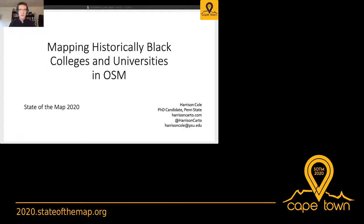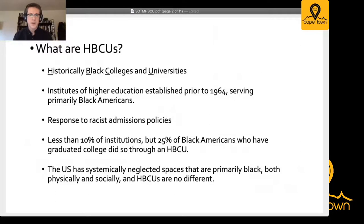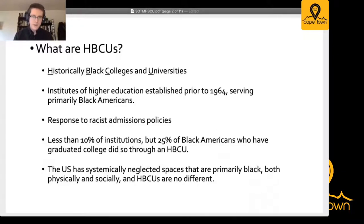Hi, my name is Harrison Cole. I'm a PhD candidate at Penn State University. I'll be talking about mapping historically Black colleges and universities in OpenStreetMap, as well as giving you some information for if you want to contribute to this work. HBCUs are schools that were established prior to 1964 when the Civil Rights Act was passed. Before that, most universities in the US had admissions policies that barred people of color from being enrolled, so these schools were established in response to that. They only comprise about 10 percent of total universities in the US, but 25 percent of Black Americans who graduated college did so through an HBCU.